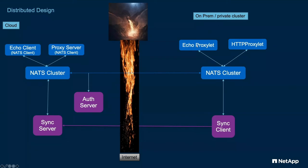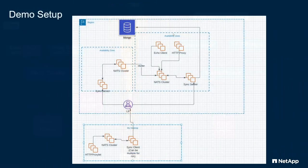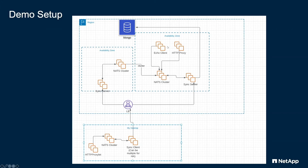We'll also demo using the HTTP proxy server to do kubectl commands to a cluster sitting behind a firewall on my Docker desktop. Here's the layout: we have a multi-node NATS cluster running both the NATS software and our sync server. For the demo, I've got the replica set to one, so only one instance each of NATS and the sync server is running. It's fronted with a basic AWS load balancer. And we have running on my desktop: the sync client, a single-node NATS, the HTTP proxlet, and the echo proxlet.